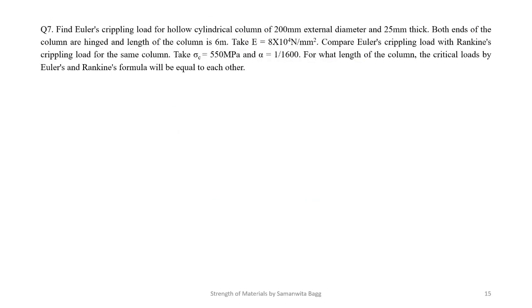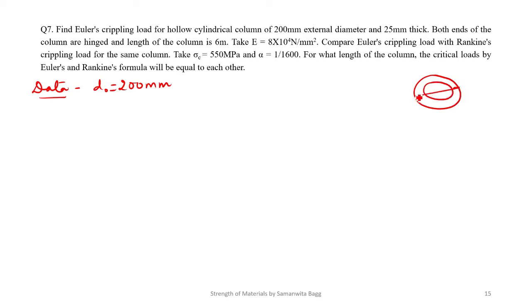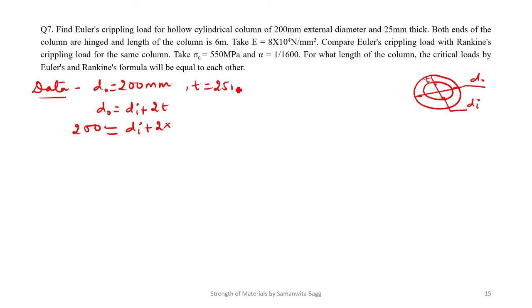Now for the second numerical: find Euler's crippling load for a hollow cylindrical column with 200 mm external diameter (DO = 200 mm) and 25 mm thickness. For a hollow column, DO = DI + 2T, so 200 = DI + 50, giving DI = 150 mm. Both ends of the column are hinged.